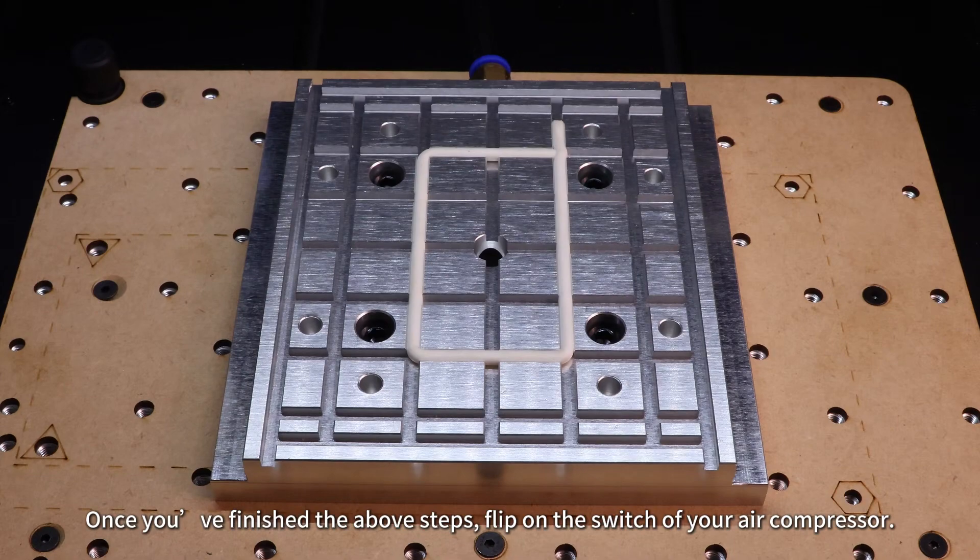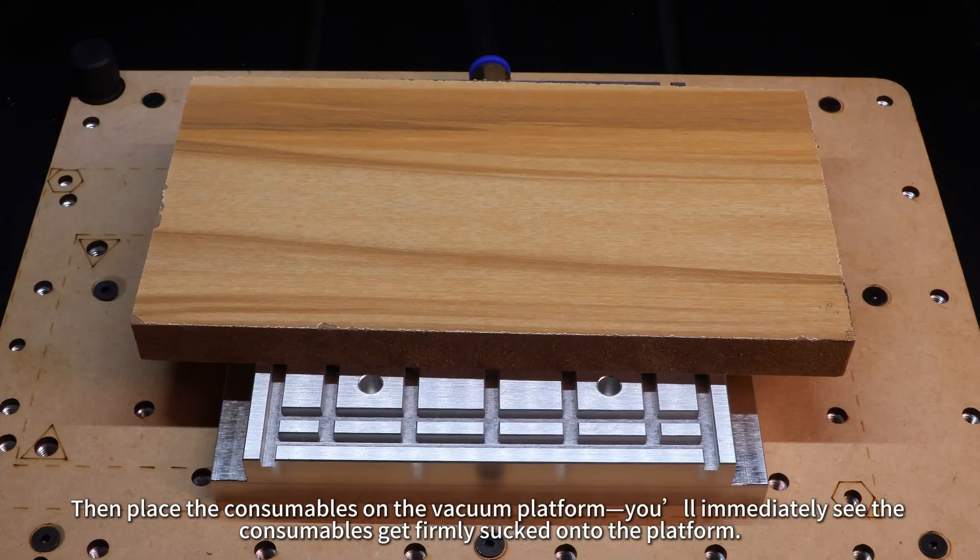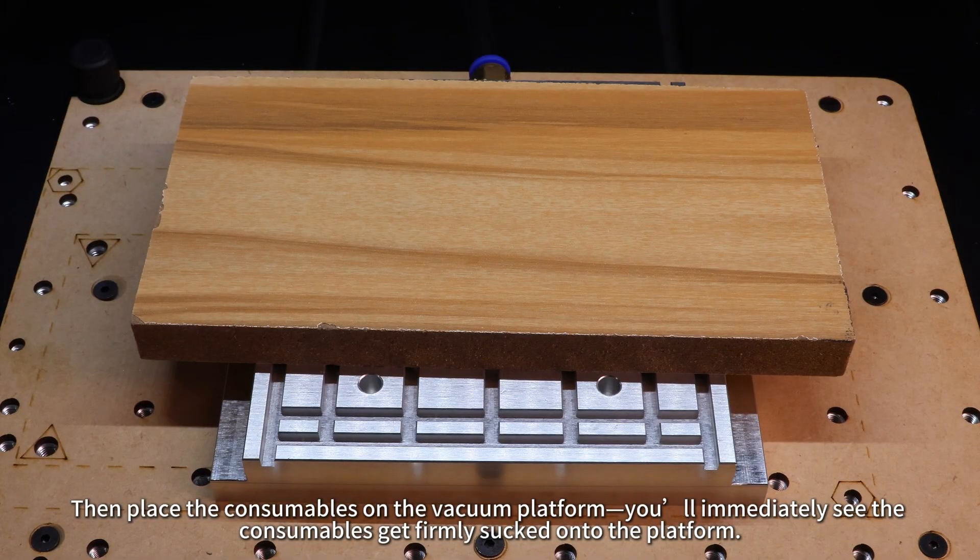Once you've finished the above steps, flip on the switch of your air compressor. Then place the consumables on the vacuum platform. You'll immediately see the consumables get firmly sucked onto the platform.